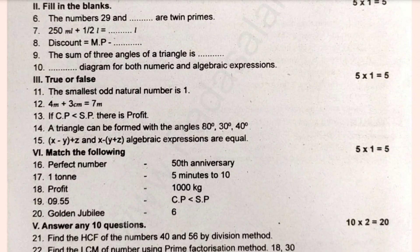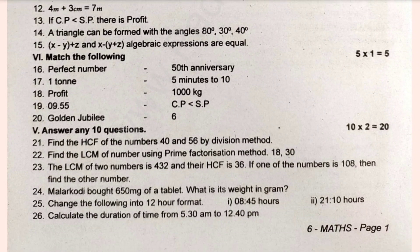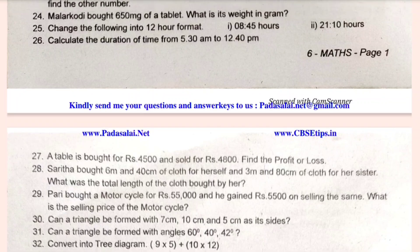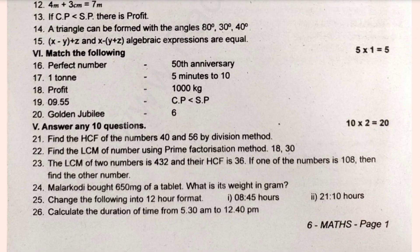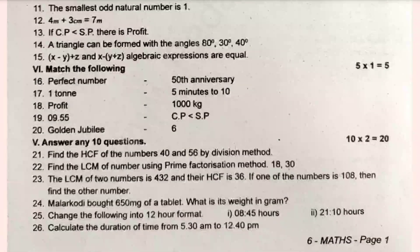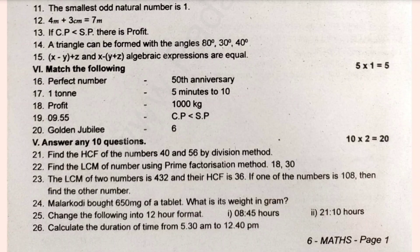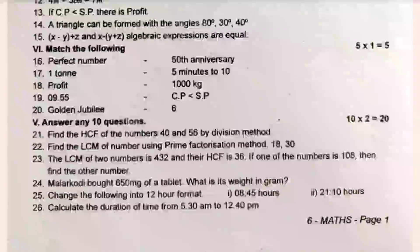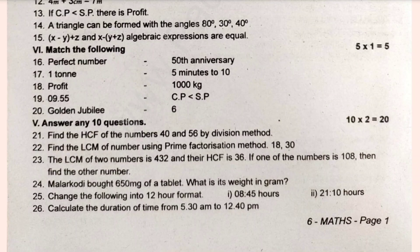Next is two marks questions. If you have a total of 13 questions, you will answer 10. Find the HCF of numbers 40 and 56 by division method. Find the LCM of numbers using prime factorization method for 18 and 30. Change the following into 12 hour format. Calculate the duration of time from 5:30am to 12:40pm.